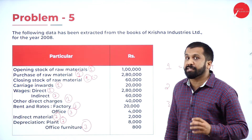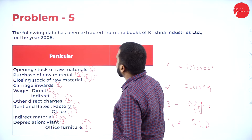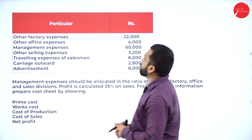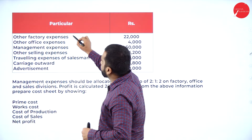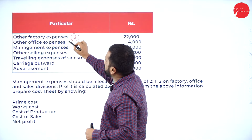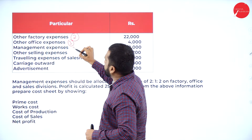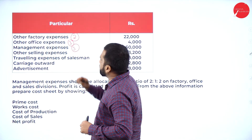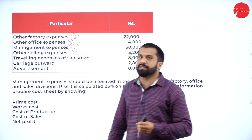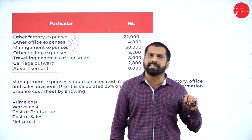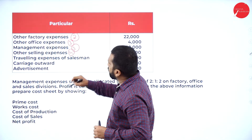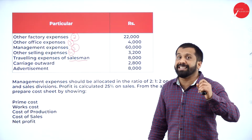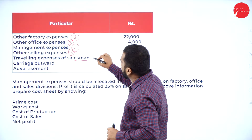Office expenses go to category 3. Other factory expenses come under category 2 — all factory-related items go to 2, office expenses go to 3. Management expenses belong to office, so management goes to category 3. Selling expenses and all selling-related items come under selling and distribution, category 4. Travelling expenses of salesman also go to category 4.